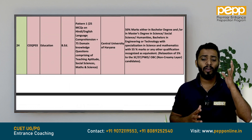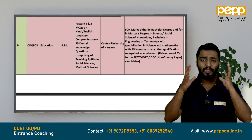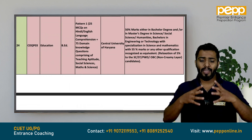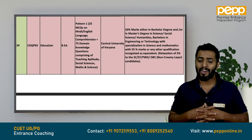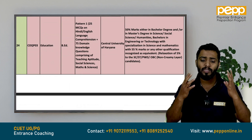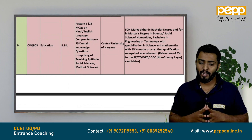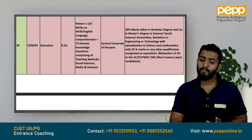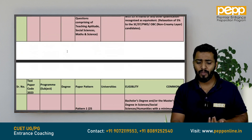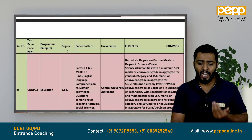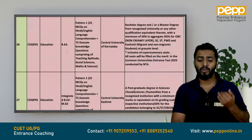The next step is the question pattern. The question paper includes English language comprehension and domain knowledge. The universities include Central University of Haryana, Central University of Jharkhand, Central University of Karnataka, and Central University of Kashmir.